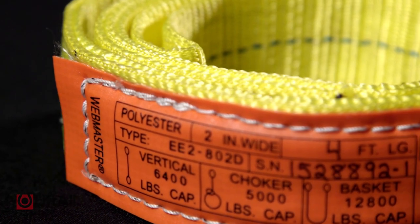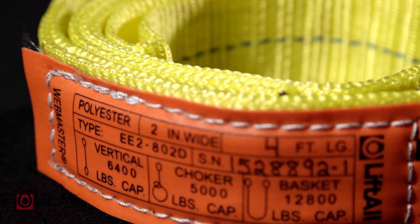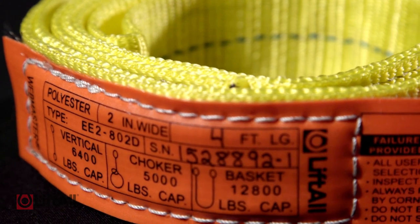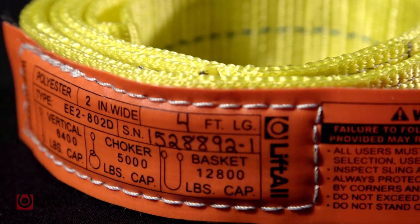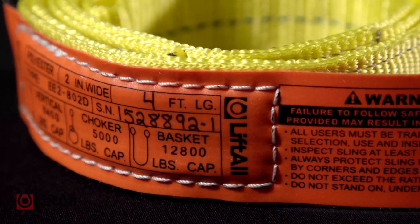All of our synthetic slings feature our Tough Tag, which is made from an abrasion-resistant polymer that far outlasts the lifespan of leather or vinyl tags, to keep that important information protected for the entire life of the sling.